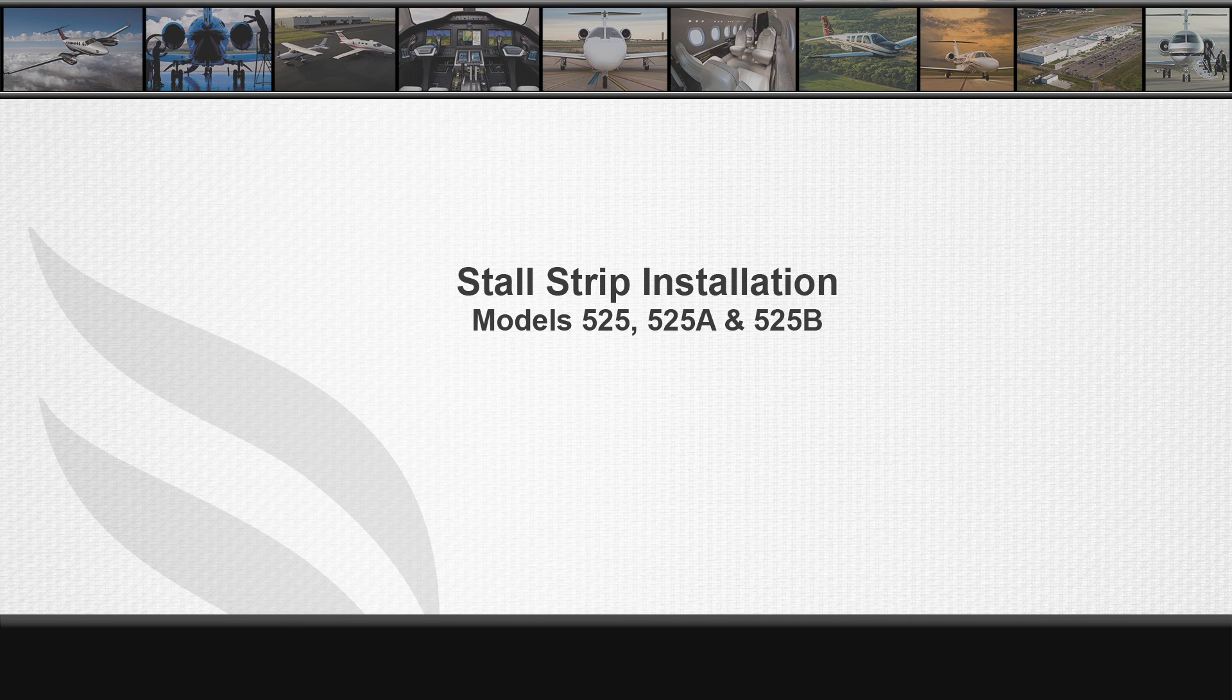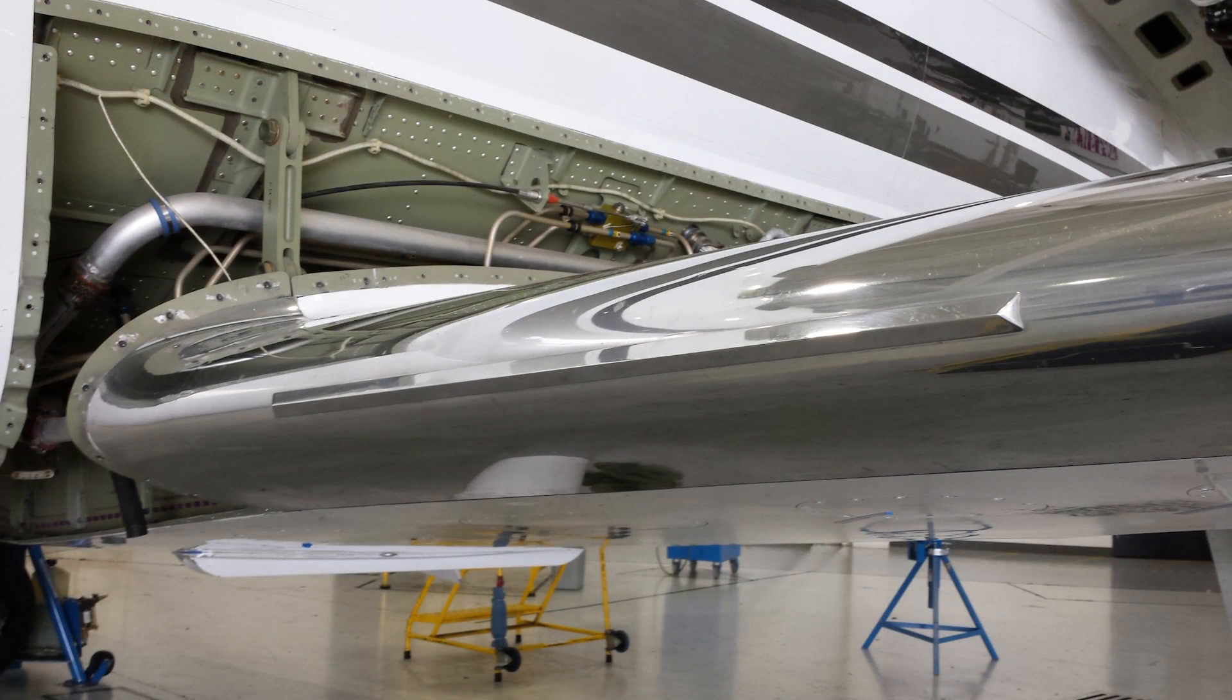The Model 525, 525A, and 525B all have very similar stall strip installations on the inboard wing leading edge.